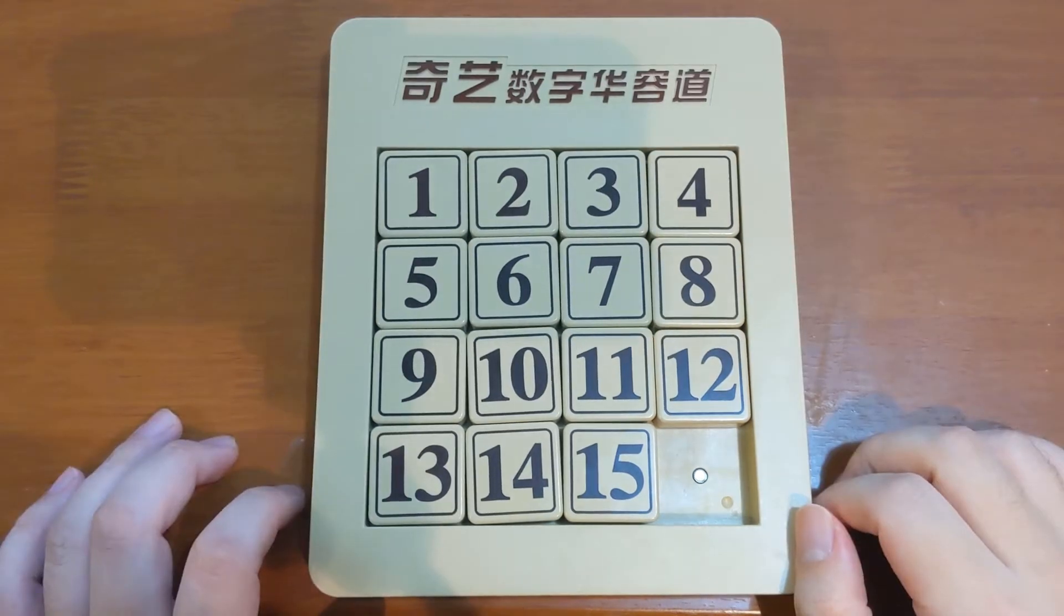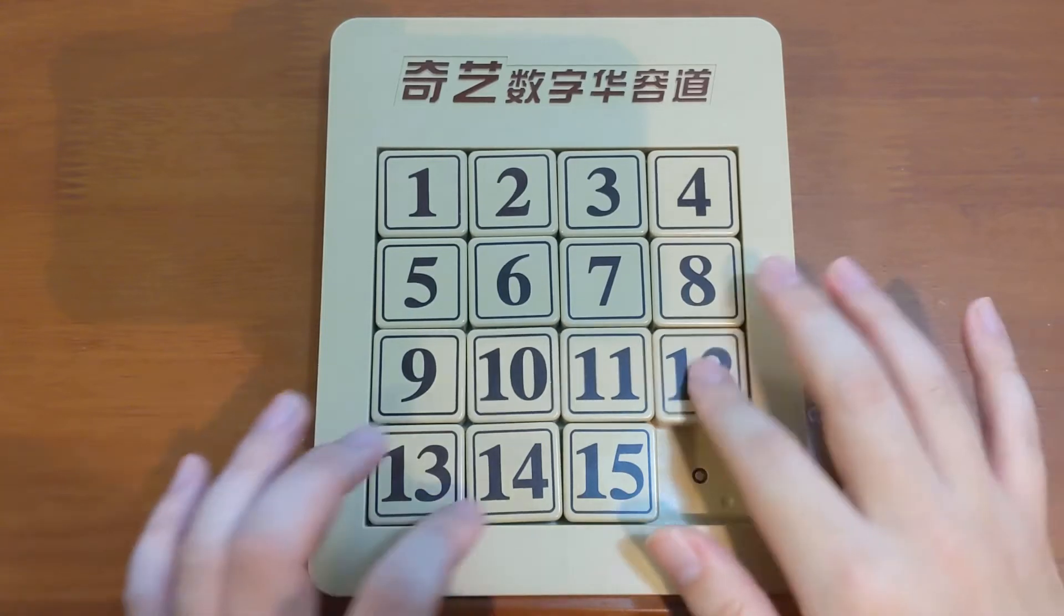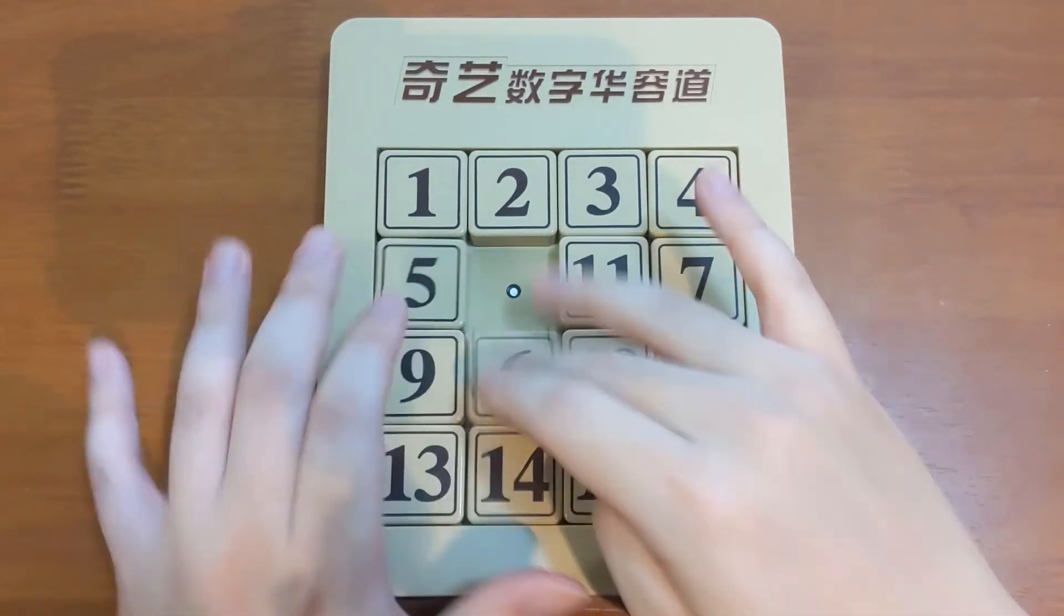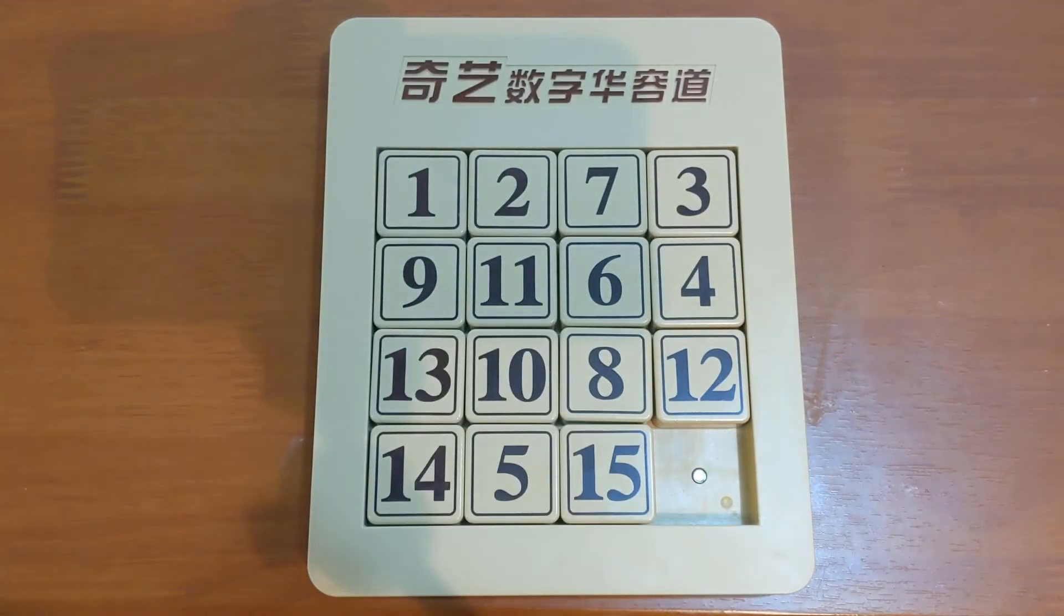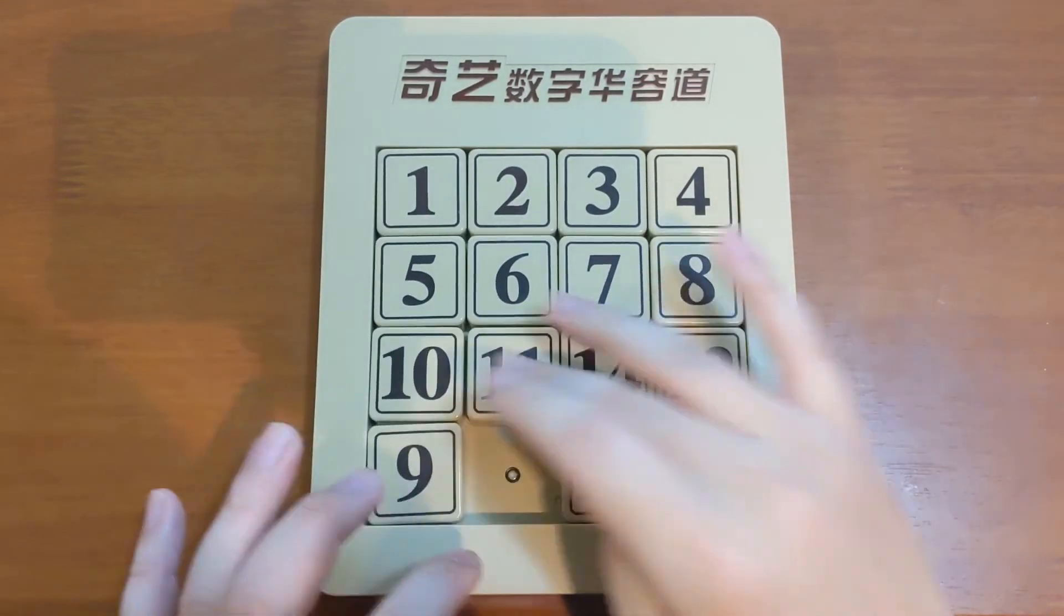This is a 15 puzzle. Some people call it Klotsky. The rule is simple. You solve it by making tiles in the order of 1 to 15, with the empty space at the bottom right. The empty space allows you to move tiles. After scramble, the goal is to recover them back in ascending order.